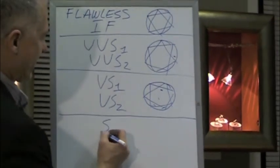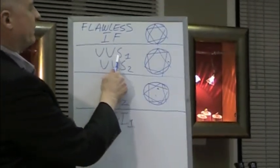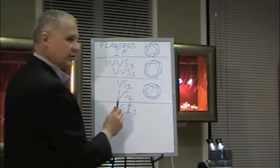Now the next grade down is called SI. Now I should mention too, VVS stands for very very slight or very very small inclusions.